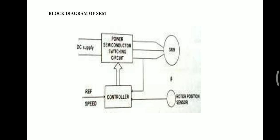The controller collects this information and also the reference speed signal and suitably turns on and off the semiconductor devices in the DC supply. The current signal is also fed back to the controller to limit the current within the permissible allowed range. This is the general block diagram of switch reluctance motor.